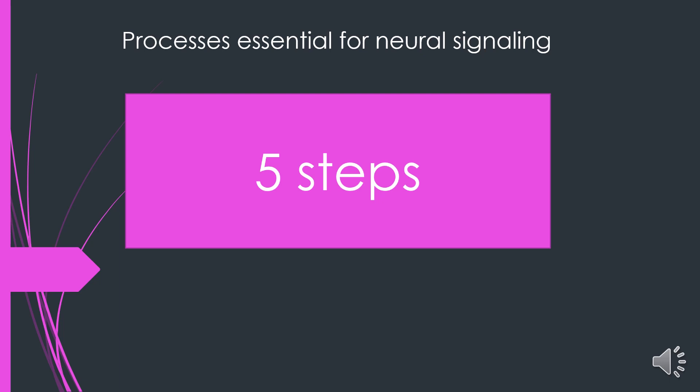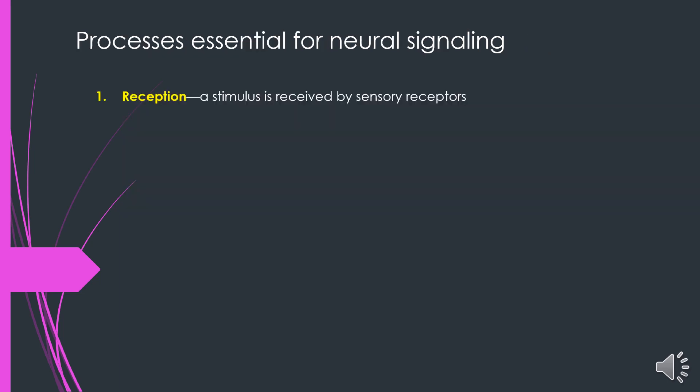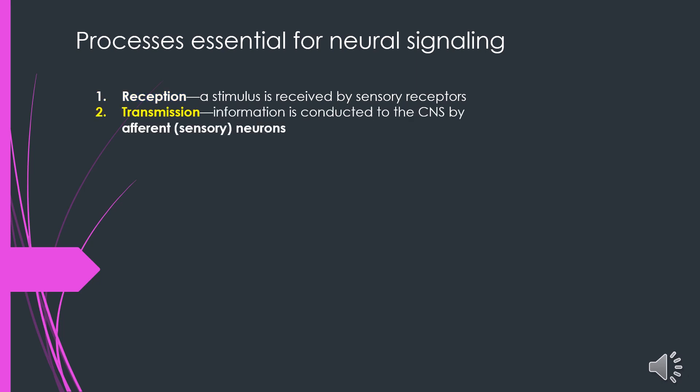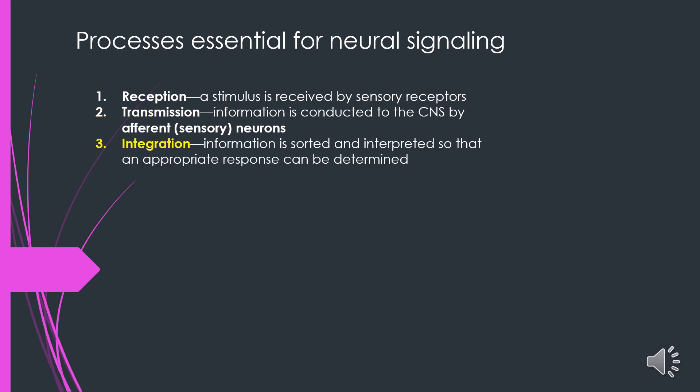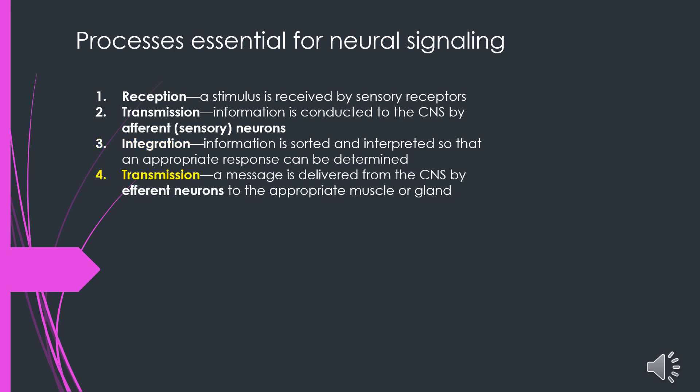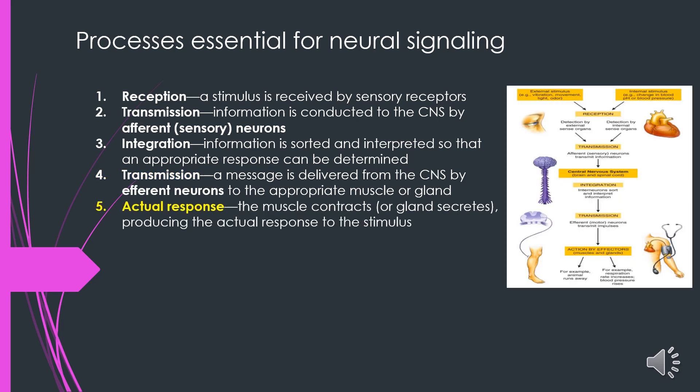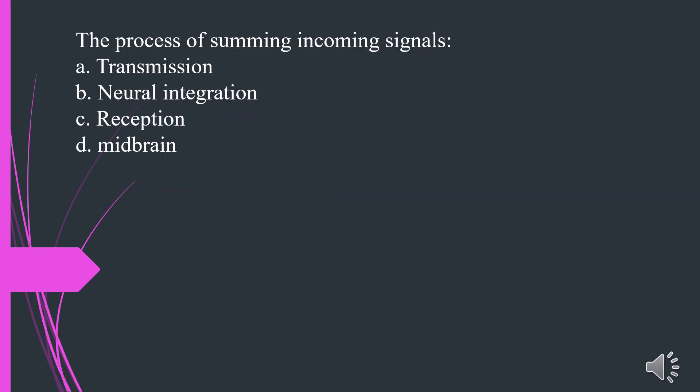Now let's learn 5 processes essential for neural signaling. Step 1: Reception — a stimulus is received by sensory receptors. Step 2: Transmission — the information is conducted to the CNS by afferent sensory neurons. Step 3: Integration — the information is sorted and interpreted so that an appropriate response can be determined. Step 4: Transmission — a message is delivered from the CNS by efferent neurons to the appropriate muscle or gland. Step 5: Actual response — the muscle contracts or gland secretes, producing the actual response to the stimulus.